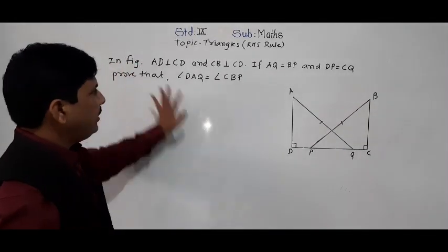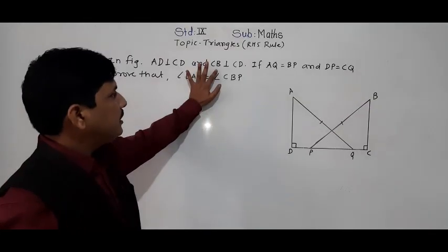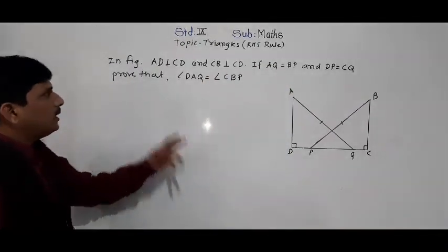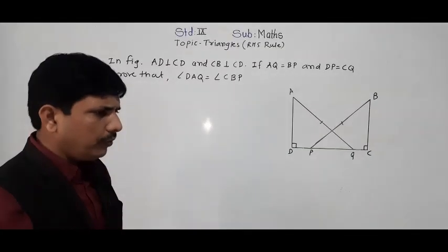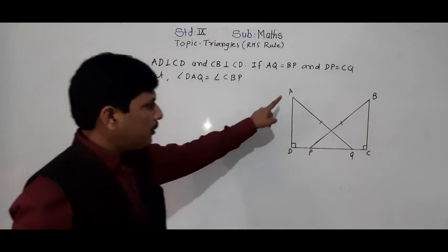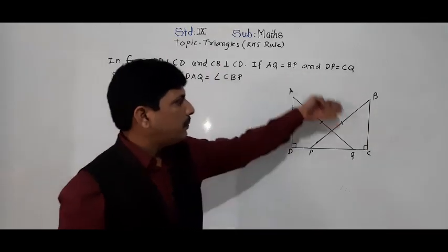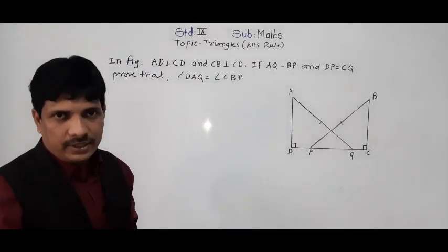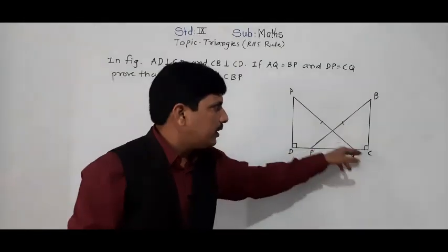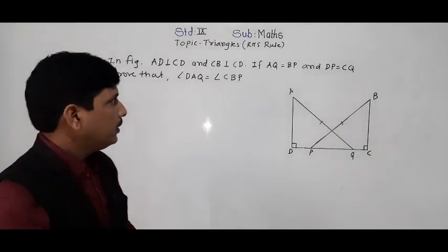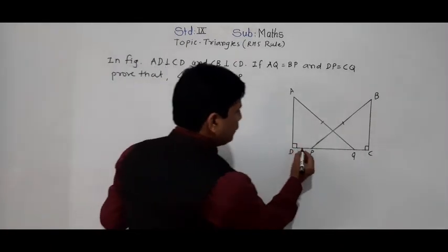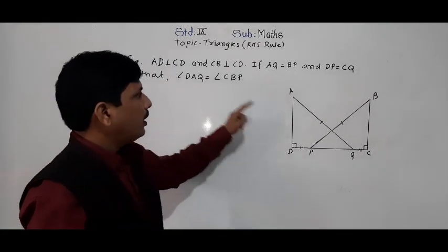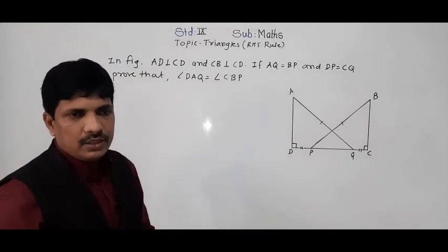The next problem: in the figure, AD is perpendicular to CD and CB is perpendicular to CD. If AQ is equal to BP and DP is equal to CQ, prove that angle DAQ is equal to angle CBP. AD and CB are both perpendicular to CD, so both angles are 90 degrees. AQ and BP are equal — these are the hypotenuses, and both hypotenuses are equal.